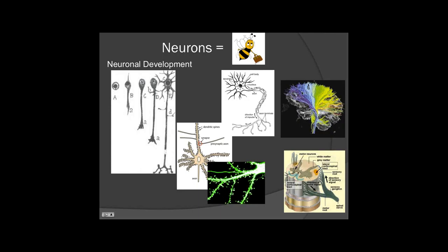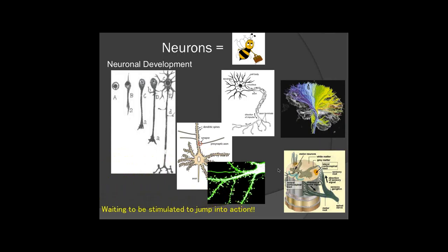The pathways from the brain come down into the spinal cord and connect with the nerves that sit inside it. Those nerves then go out of the spinal cord — the peripheral nervous system — and connect back up to the muscle to get the muscle to move. The neurons are key — they're our major communication. They're just waiting to be stimulated so that they can jump into action.